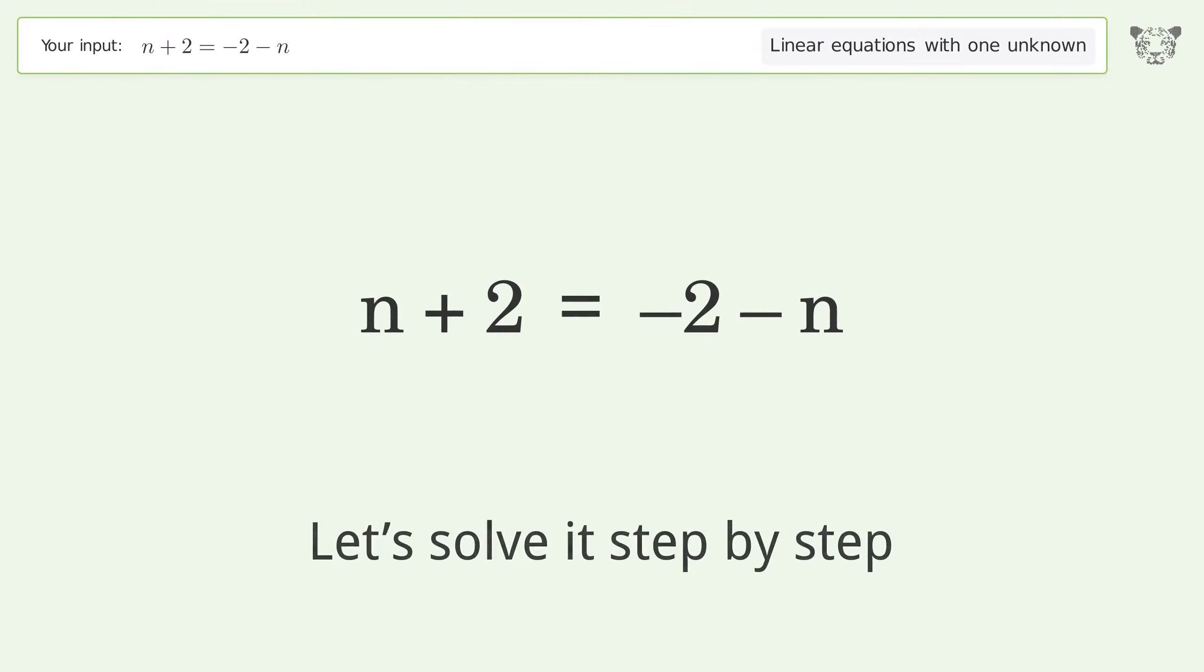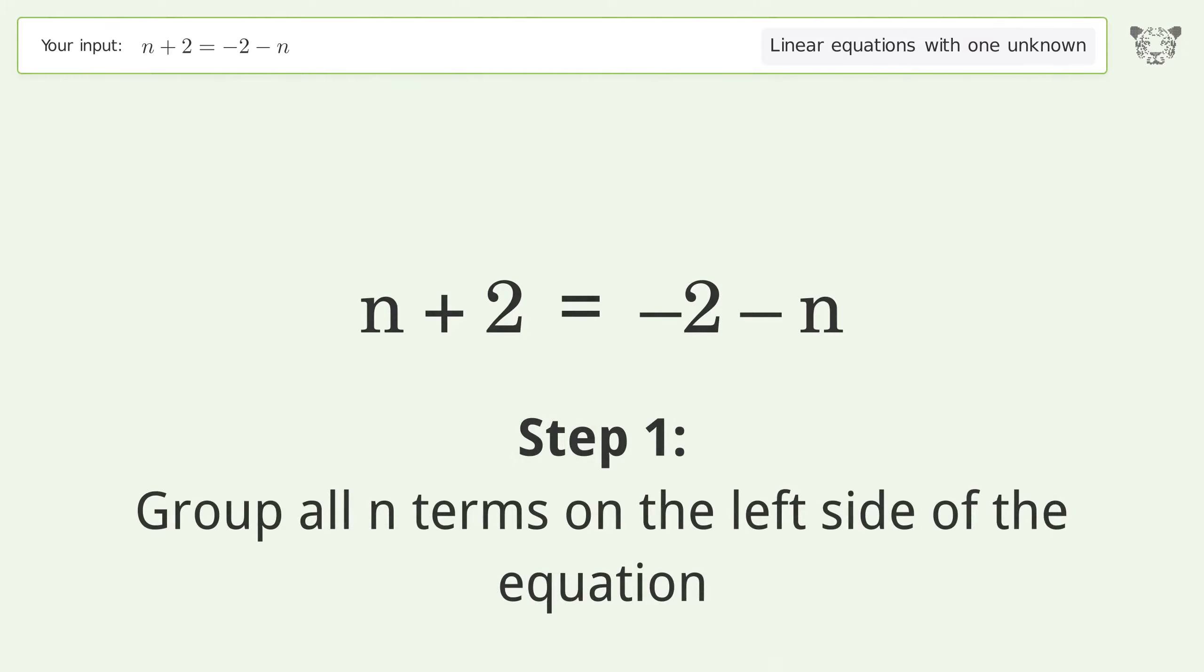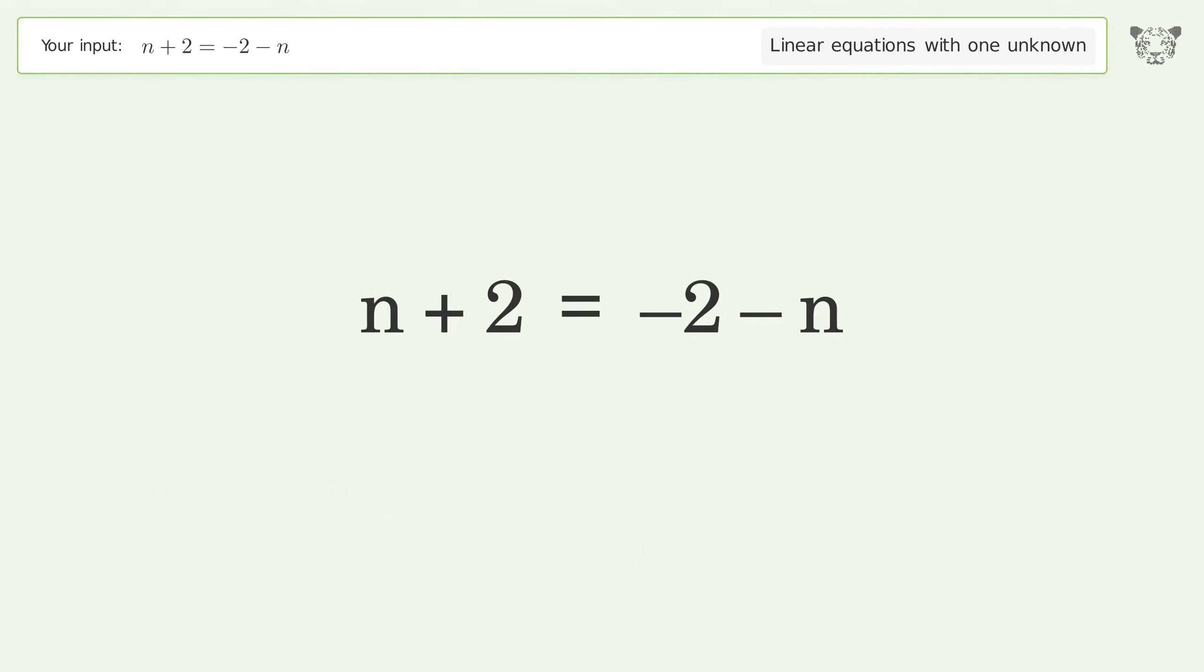Let's solve it step by step. Group all n terms on the left side of the equation. Add n to both sides.